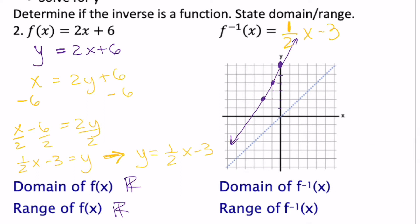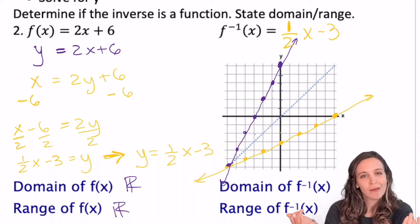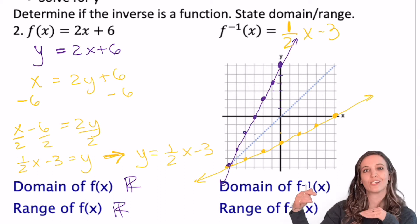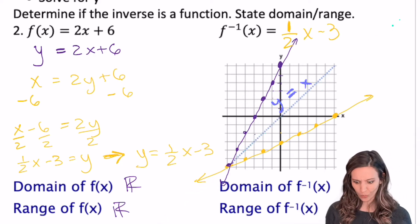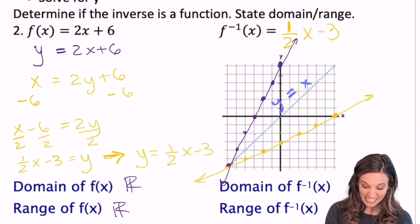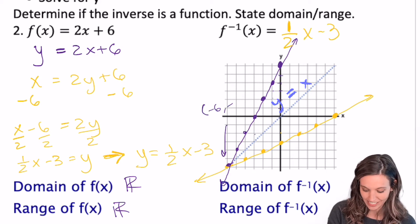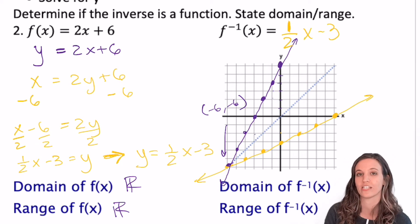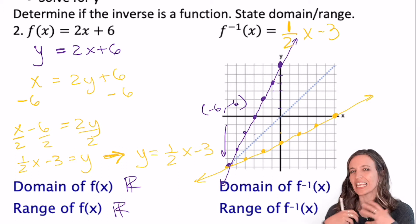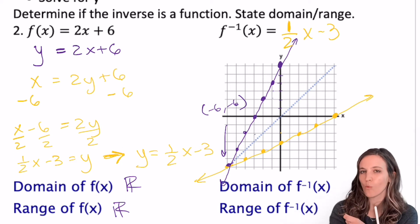Let's get that plotted. I've got my inverse plotted and it totally is a reflection of the original equation about that y equals x line. We've discovered something else here: these intersect on that line of symmetry as well at negative six, negative six. So a function and its inverse, if they intersect, are going to intersect on that y equals x line. Let's verify some points and see if our x and y values truly did swap.